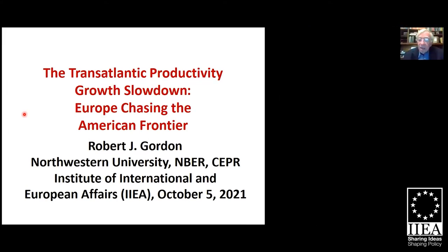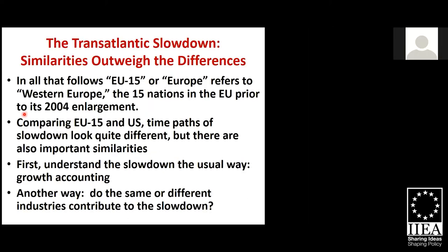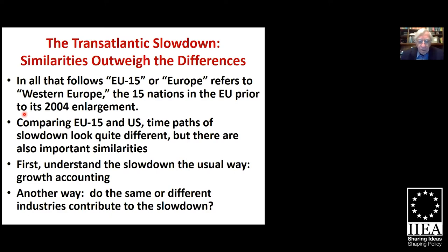Delighted to be here. Let me announce the title of my talk: The Transatlantic Productivity Slowdown — Europe Chasing the American Frontier. So let's start by identifying what I mean by Europe. What we often call Western Europe consists of the 15 nations that were in the EU prior to its enlargement in 2004. That includes all five of the big nations — UK, France, Germany, Italy and Spain — and almost all of the remaining Western European nations except for Norway and Switzerland. We're going to compare the path of productivity growth over the post-war period for the EU-15 versus the United States.